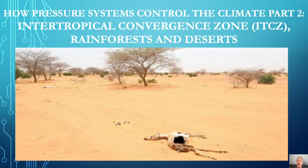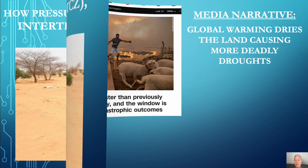Welcome back and Happy New Year. Today I'm presenting Part 2: How Pressure Systems Control Climate, focusing on the shifts in the Intertropical Convergence Zone, or ITCZ, and why warmer temperatures attract more rain, and thus why the ITCZ determines the location of both rainforests and deserts.